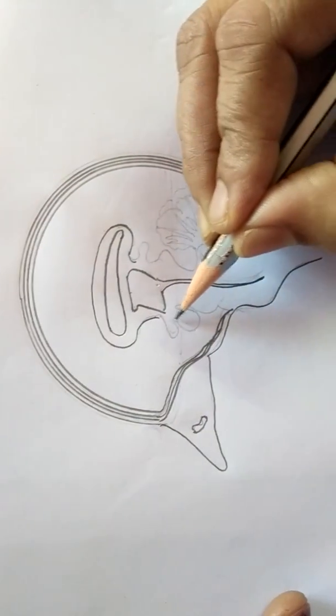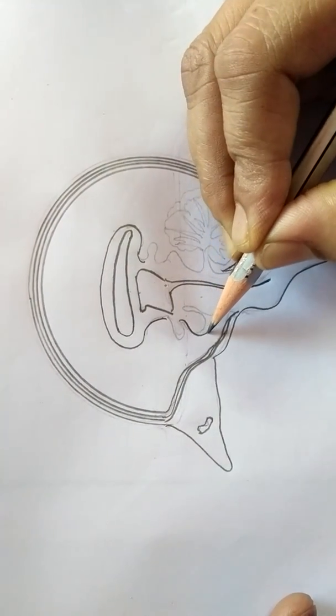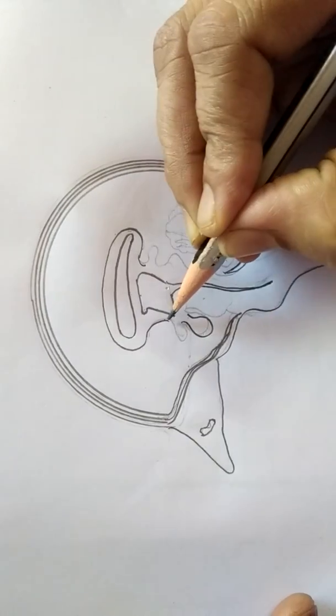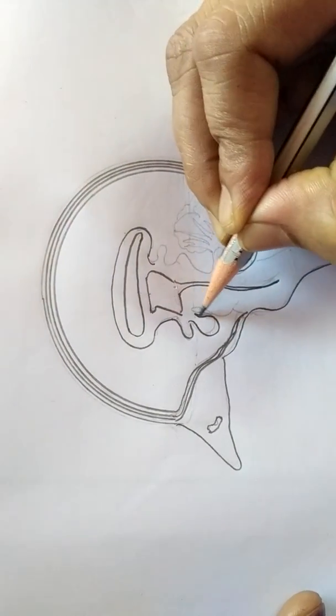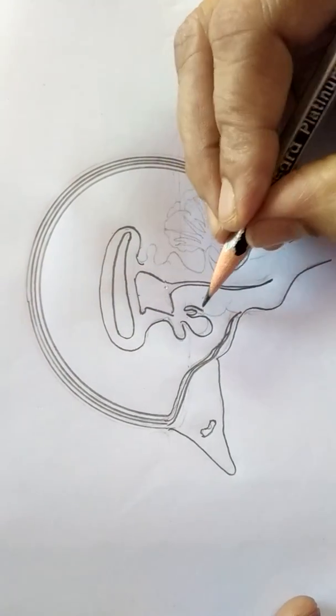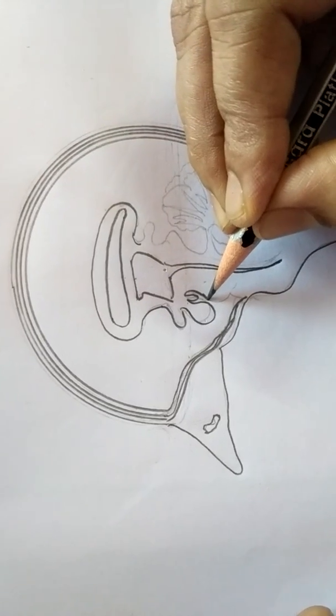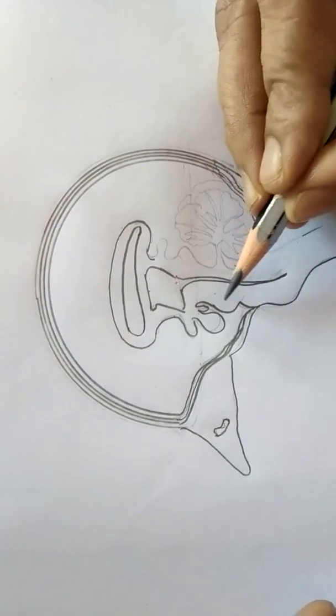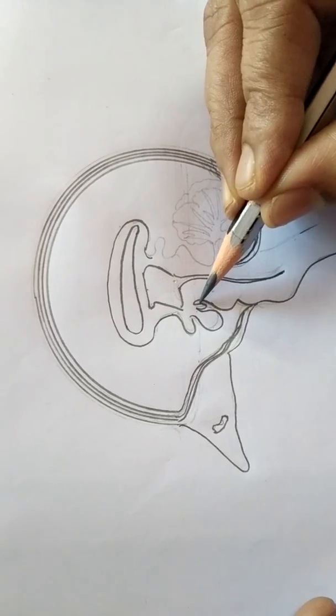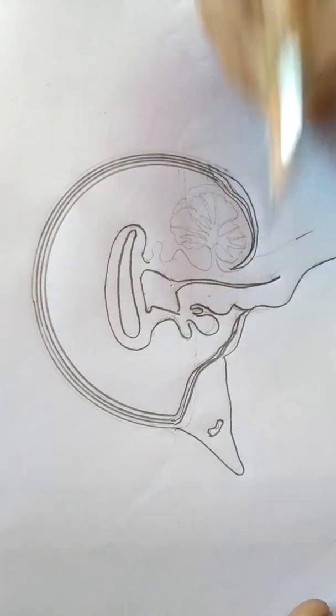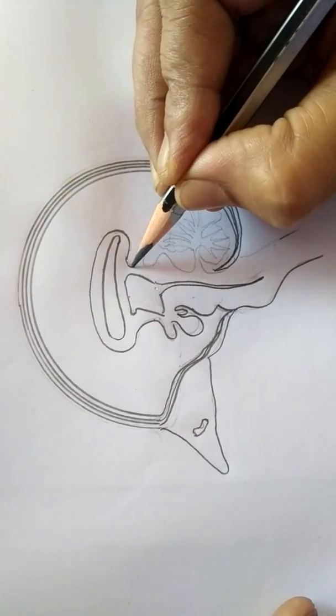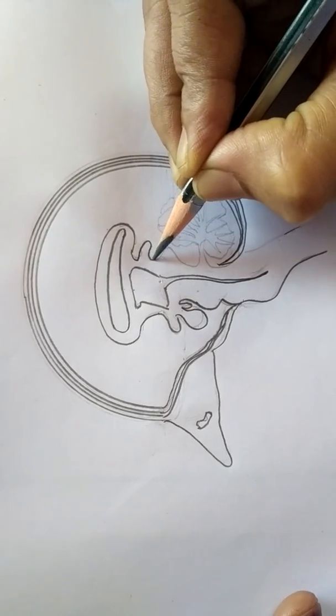Next, this is the half. Below the half, draw the pituitary gland, and like reverse three like this. Pituitary gland, one folding and reverse three. Here also just like number three.